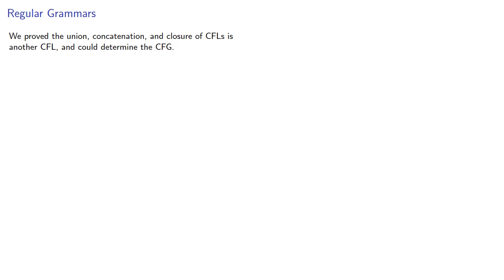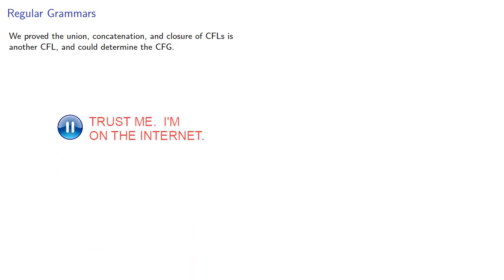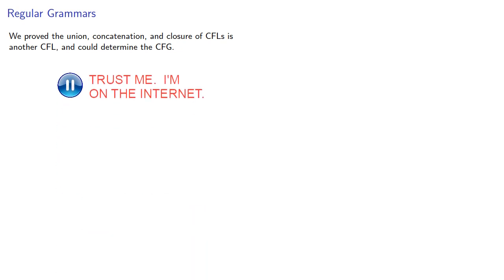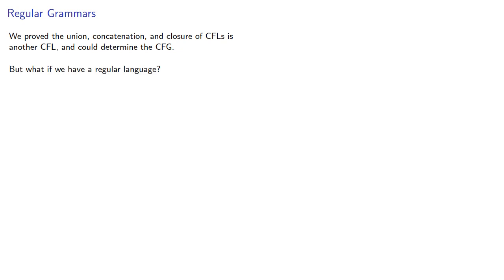We've proved that the union, concatenation, and closure of context-free languages is another context-free language, and we can determine the corresponding context-free grammar. But what if we have a regular language? Does it have a context-free grammar? Let's find out.